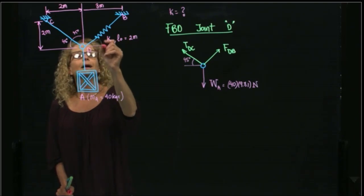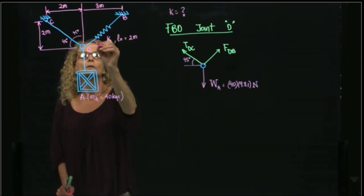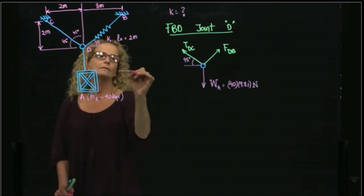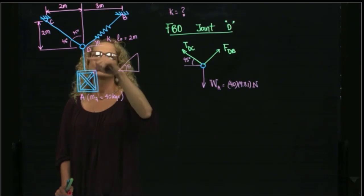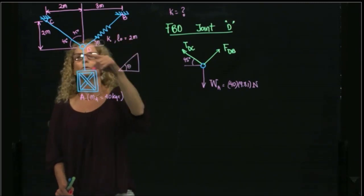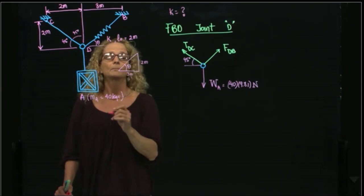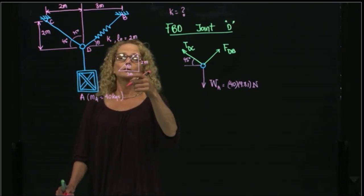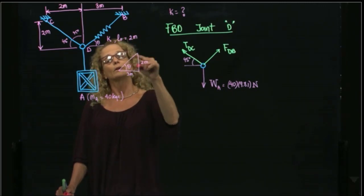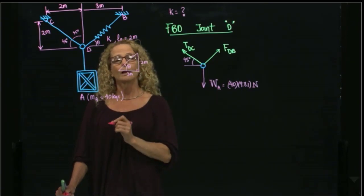And this angle is given by the dimensions. As you see, this is theta. And this theta is formed by this triangle. This triangle is 2 meters over here and 3 meters over here. We can either get the inverse tangent of these two dimensions, or we can get this length over here.